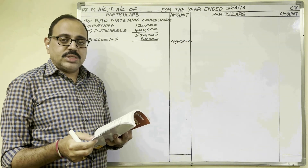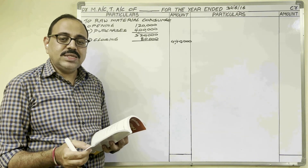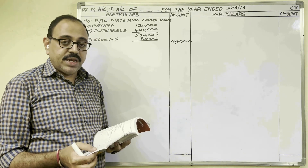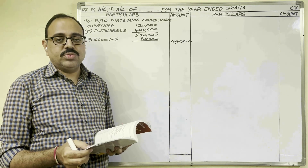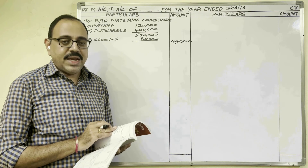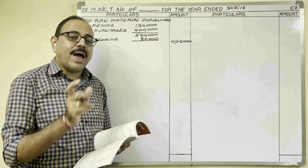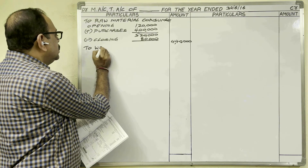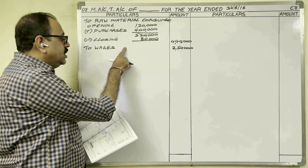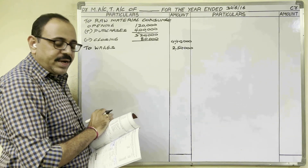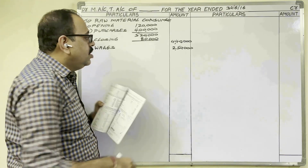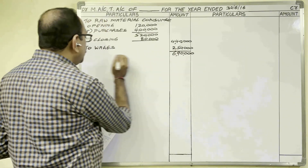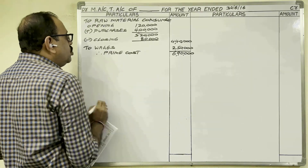Next, work in progress we will show at the end. Finished goods details go in the trading account. From transactions during the year, wages 2,50,000 is a direct wage — the wage directly linked with manufacturing of the products. So direct wages on the debit side: 2,50,000 rupees. Direct expenses are not given separately, so raw materials consumed and wages are added together. This total is known as prime cost, also known as direct cost.